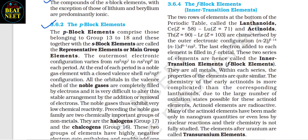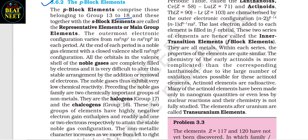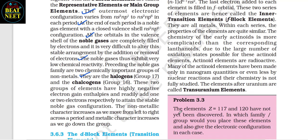3.6.2 The p Block Elements. The p block elements comprise Groups 13 to 18, and together with the s block elements are called the representative elements or main group elements. The outermost electronic configuration varies from ns² np¹ to ns² np⁶ in each period. At the end of each period is a noble gas element with a closed valence shell (ns² np⁶) configuration. All orbitals in the valence shell of noble gases are completely filled, making it very difficult to add or remove electrons — thus noble gases exhibit very low chemical reactivity. Preceding the noble gases are two chemically important groups of non-metals: the halogens (Group 17) and the chalcogens (Group 16). These elements have highly negative electron gain enthalpies and readily add one or two electrons respectively to attain stable noble gas configuration. Non-metallic character increases from left to right across a period, while metallic character increases going down a group.